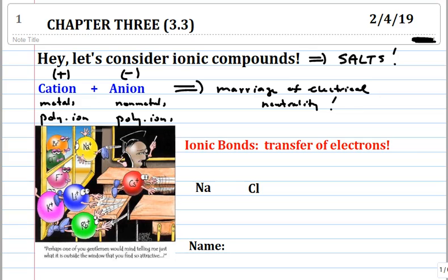Ionic compound salts have what we call ionic bonds. To make this happen, you can think of it as a transfer of electrons.